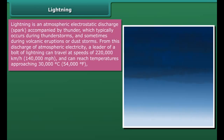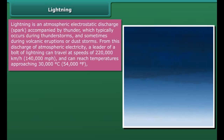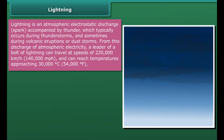An electroscope is an instrument used to detect and test small electric charges. It works on the principle that like charges repel each other. An electroscope is used to detect whether a body is charged or not. Touch the brass disc of the electroscope with the given body — if the aluminium leaves diverge, the body is charged; if the leaves do not diverge, the body is not charged.